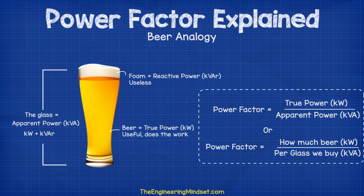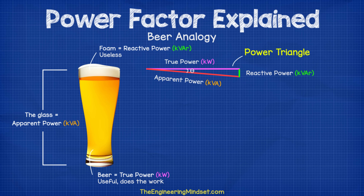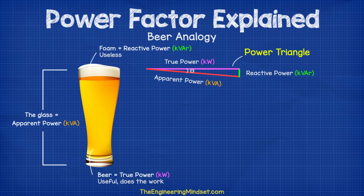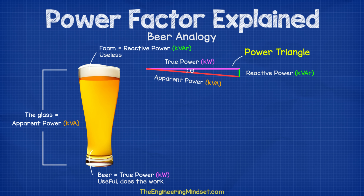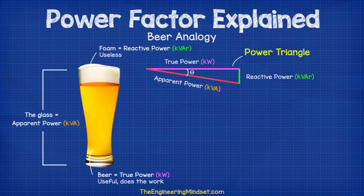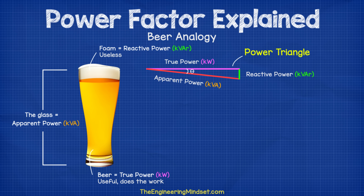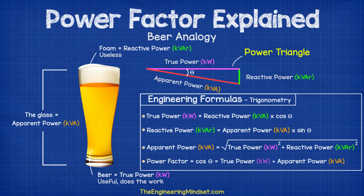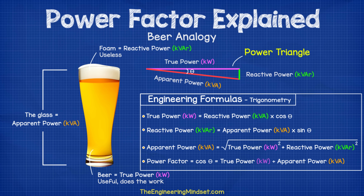If we briefly touch on electrical engineering — and I will keep this part brief — then we might see this expressed as a power triangle. I'll draw it as a leading power factor as it's easier to visualize. The beer, or true power, is the adjacent line. Then we have the foam, which is the reactive power on the opposite side. Then for the hypotenuse side, which is the longest side, we have the apparent power. This is at an angle from the true power. The angle is known as theta. As the reactive power, or the foam, increases, then so does the apparent power, or the KVA. We could then use trigonometry to calculate this triangle — we'll do some calculations and worked examples later in this video.